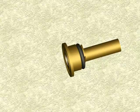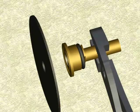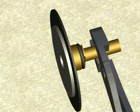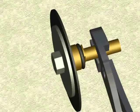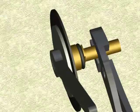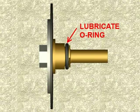Assemble stem unit using new stem, O-ring, diaphragm, diaphragm disc, and diaphragm nut or bolt. Next, using the grease in the repair kit, lubricate the O-ring on the stem.